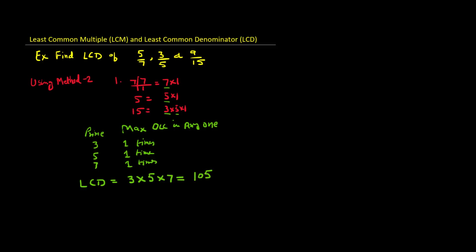Now this same method — if we want to use it on some larger numbers. For example, find the LCM of 14, 20, 21, and 50. So now we have 4 numbers. First, we find the prime factors of these numbers.